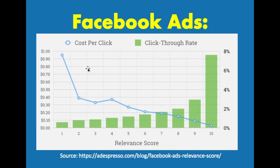Now we're going to look at Facebook Ads. You can see a relevant score of 1 has a very high cost per click, and there's a huge drop all the way down to 2, and it continues to go down. If you have a relevant score of 10, which is pretty hard to do, you're going to have a very high click-through rate — almost 8% — and a very low cost per click because Facebook delivers on a CPM basis. If you have a higher click-through rate and you're getting more clicks, you're not being charged for each individual click, you're just getting charged for that impression. So on Facebook, you want to drive as many clicks as possible.